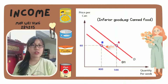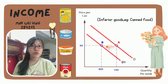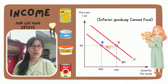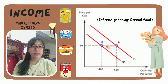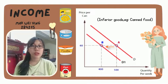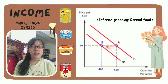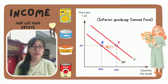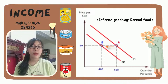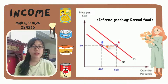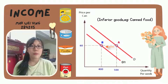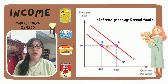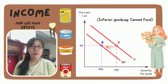Inferior goods include canned food, instant noodles, breads, and snacks. When people's income increases, they decrease their demand for inferior goods because they have more buying power and can buy healthier alternatives. Through this graph, we can see that with a fixed market price of $0.60, the quantity demanded for canned food decreases from 500 to 400 units.